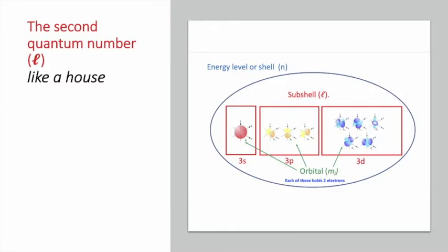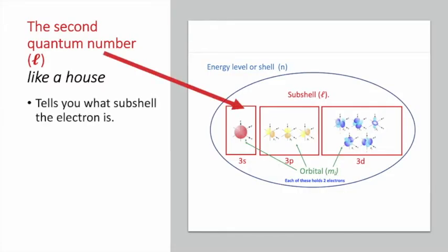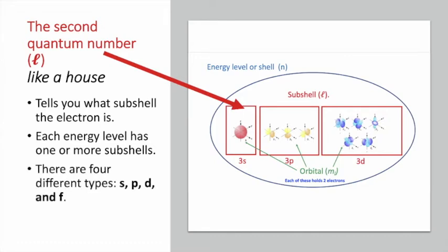The second quantum number, L, is like a house. It tells you what sub-shell the electron is in. Each energy level has one or more sub-shells. There are four different types of sub-shells: S, P, D, and F. Each of these sub-shells contains one to seven orbitals. Now, not all shells have all of the sub-shells in them. For example, some have only S sub-shells. Some have S and P's. Some have S, P's, and D's, etc.